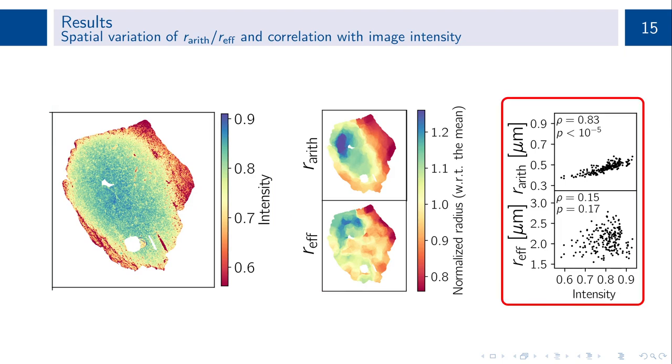This was also quantitatively assessed in a correlation analysis. We generated similar maps to those shown on the image in the center, but sampled on an equally spaced grid and then computed the correlation with the image intensity. For this, we pooled over five sections with similar axon radii distributions. While the arithmetic mean radius correlated significantly with the image intensity, the effective radius did not.